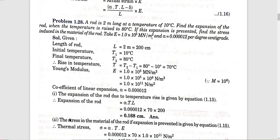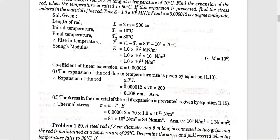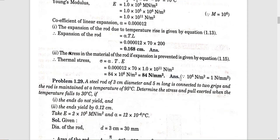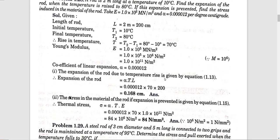E is equal to 1 into 10 raised to 5 MN per meter square, and alpha is equal to 0.000012 per degree centigrade. This is a direct application question.